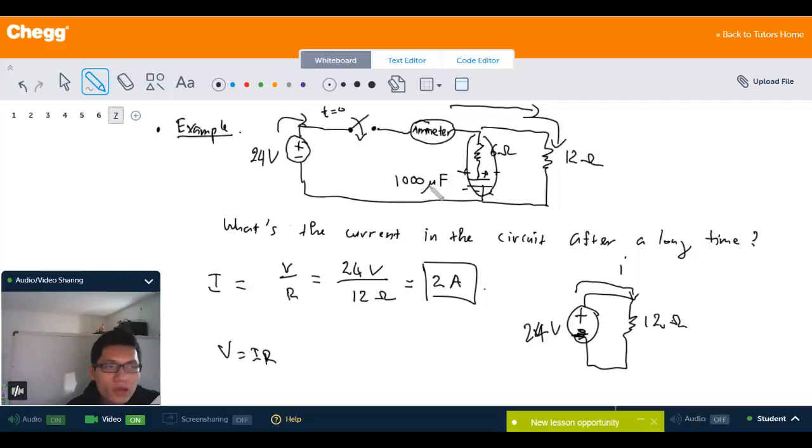This 6 ohm resistor is also connecting to a capacitor plate which has the value of 1000 microfarads. So the question is: what is the current inside the circuit after a long time after we close the switch, for example like two minutes later or five minutes later?